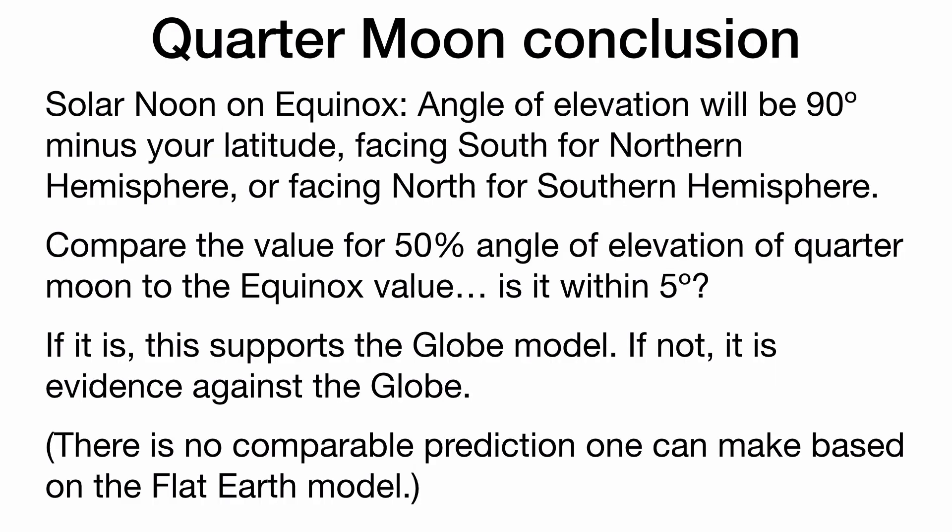Our conclusion: at solar noon on the equinox, the angle of elevation will be 90 degrees minus your latitude, facing south for the northern hemisphere or facing north for the southern hemisphere. We compare that value to our interpolated value for 50% illumination — the angle of elevation of the quarter moon. Is it within five degrees? If it is, this supports the globe Earth model, because this prediction was based purely on heliocentric geometry.